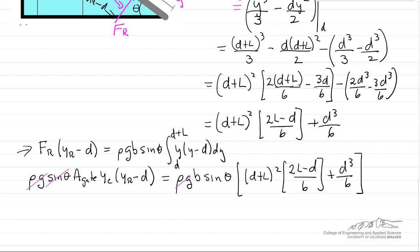Because ρg sin(θ) cancels on both sides of the equation. The area of the gate is b times the length. Just substitute b times the length for the area of the gate. Then b also cancels.